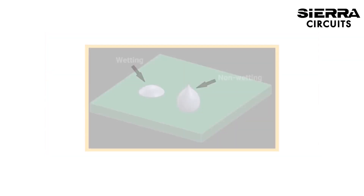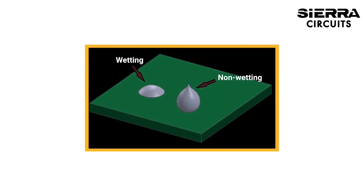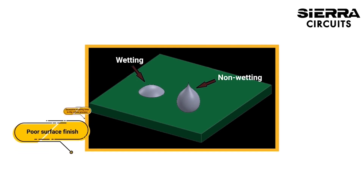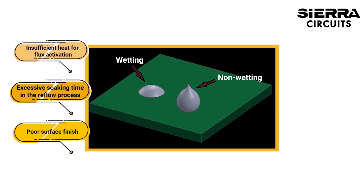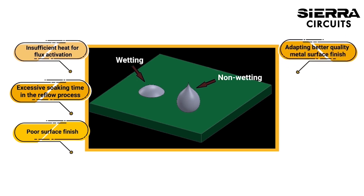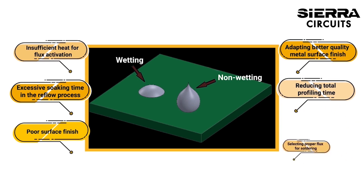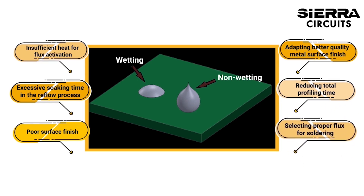Non-wetting happens when the fluid solder does not adhere adequately to component leads or pads. Poor surface finish, excessive soaking time in the reflow process, and insufficient heat for flux activation can cause non-wetting issues. This can be prevented by adopting a better quality metal surface finish, reducing total profiling time, and selecting a proper flux for soldering.